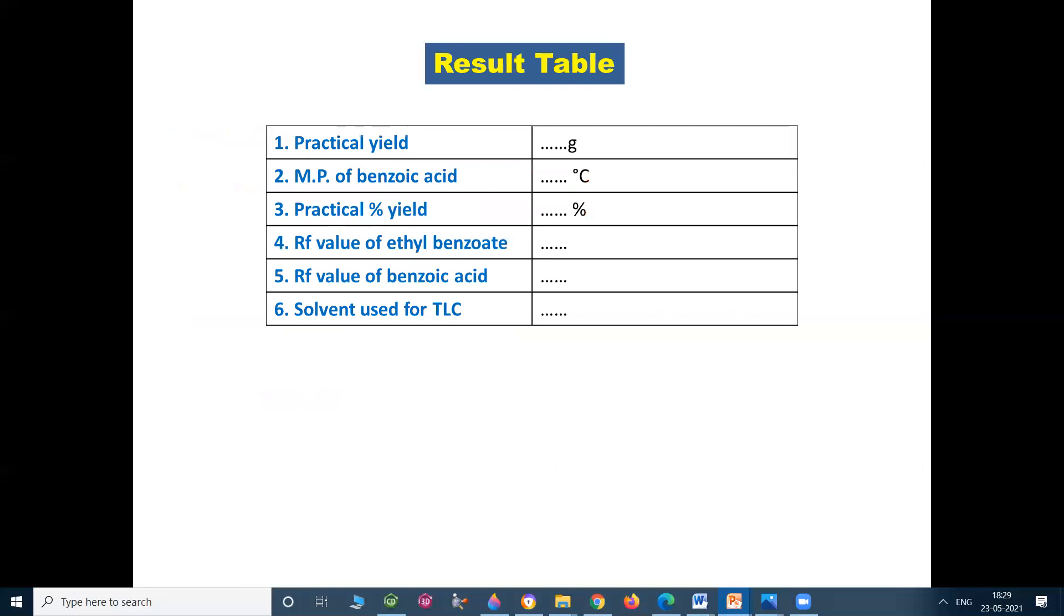After that write the result table: practical yield, melting point of benzoic acid, practical percent yield, RF value of ethyl benzoate, RF value of benzoic acid, solvent used for TLC.